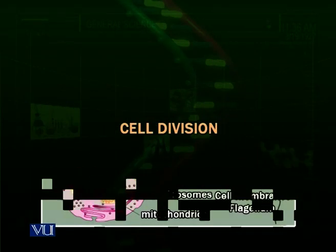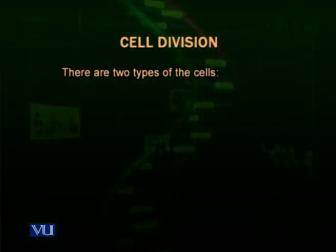Now we go ahead towards cell division. Cells need to grow. Organisms need to grow and sometimes increase in their size. Sometimes they are wounded and they need healing. They have to increase in number. We call this cell division.